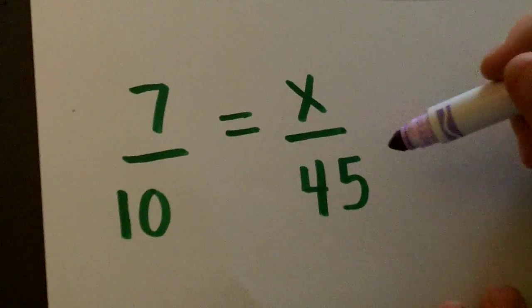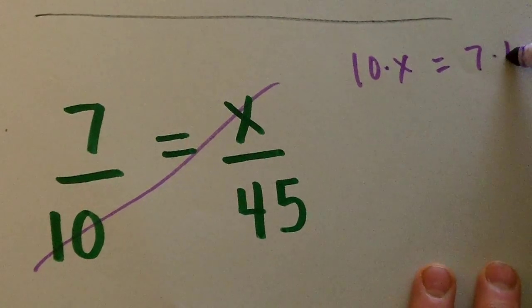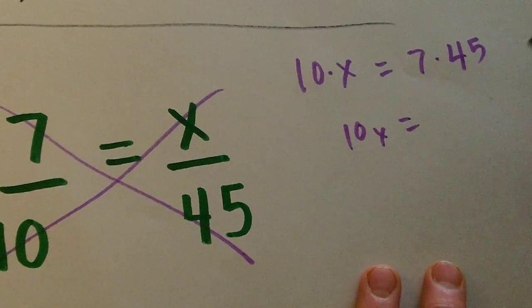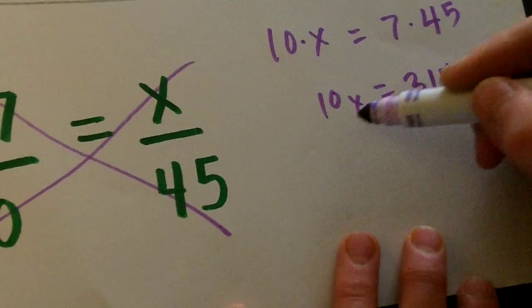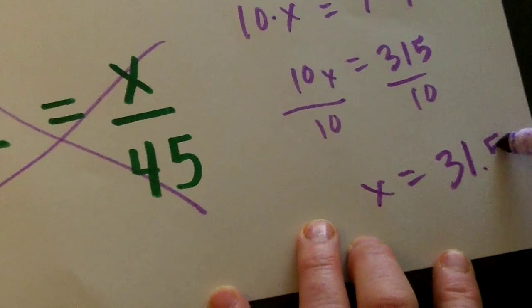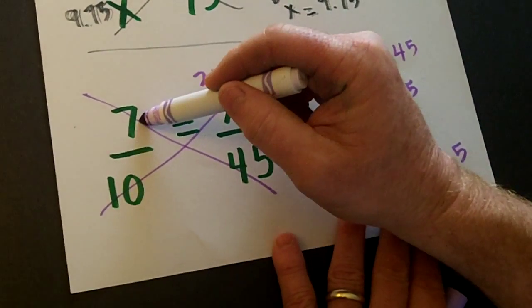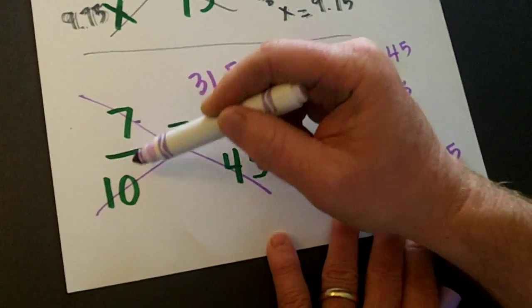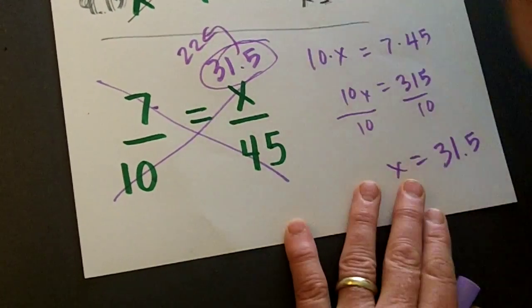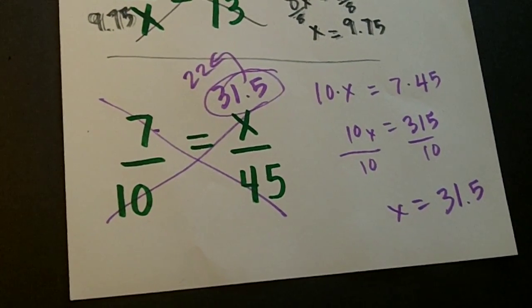Now let's go to the last one here. So we get 10 times X is equal to 7 times 45. And so that's 10X is equal to 315. Divide by 10, and we get X is equal to 31.5. Let's see if that's realistic. 7 is above half of 10. What's half of 45? 22. 31.5 is above that. So that makes good sense. All right. I hope you know how to compute fractions.